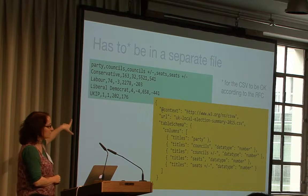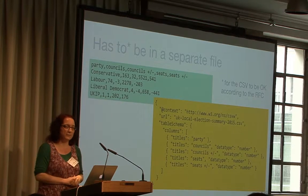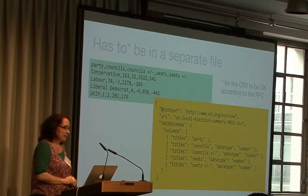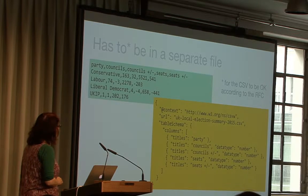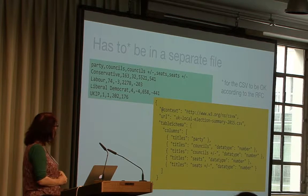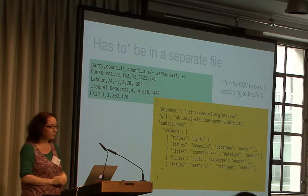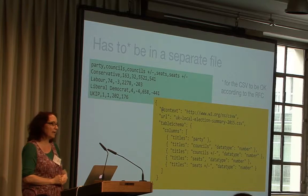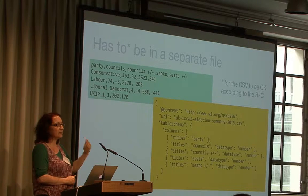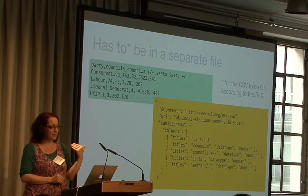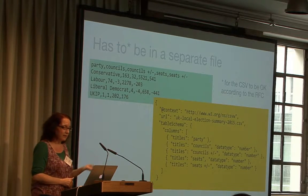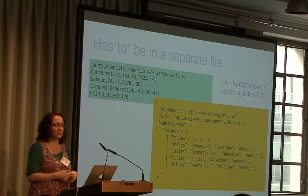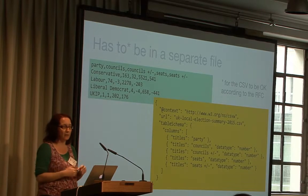This is the kind of JSON format we use in the CSV on the Web standard. You can see it says this is CSV on the Web metadata for the file at UKLocalElectionSummary2015.csv, and the schema is: columns of party, councils (which is a number), councils plus minus (a number), seats (a number), seats plus minus (a number) — really simple metadata.